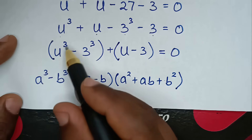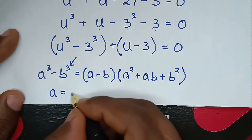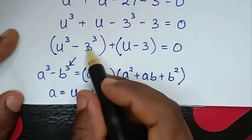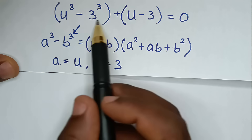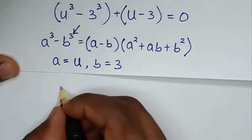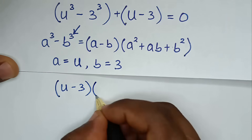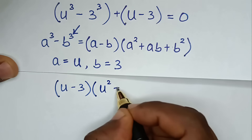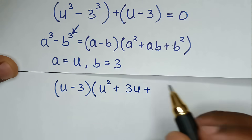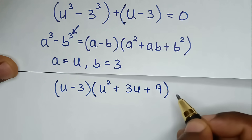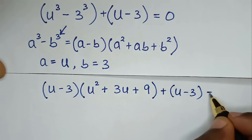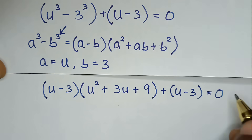Because this part is in this form, we expand using the difference of cubes. So it becomes (u - 3)(u² + 3u + 9) + (u - 3) = 0.